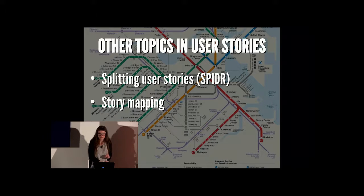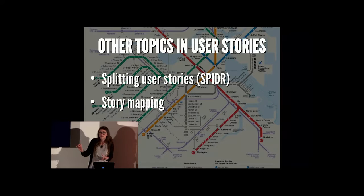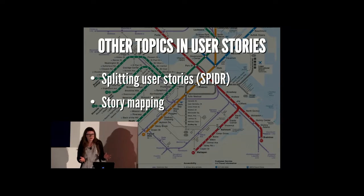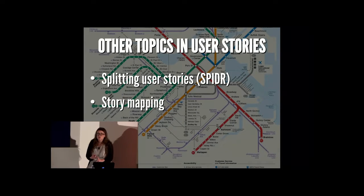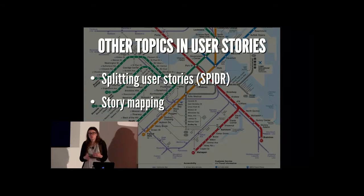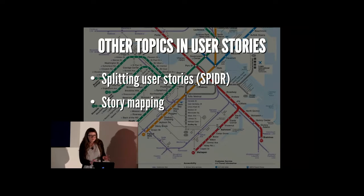How are we doing on time? I've identified a couple other topics I haven't quite gotten to. A couple things I haven't specifically made slides for are splitting stories and story mapping. Splitting stories is how you take the larger, more general product backlog item and turn it into something sprint-sized that your team can complete in just one sprint. That is the SPIDR method — spike, path, interface, data, and rules.